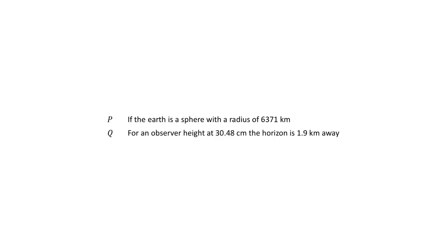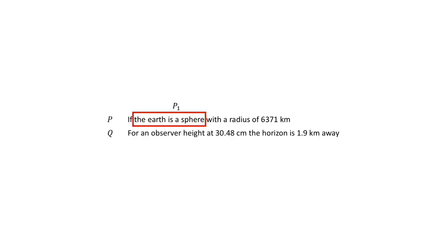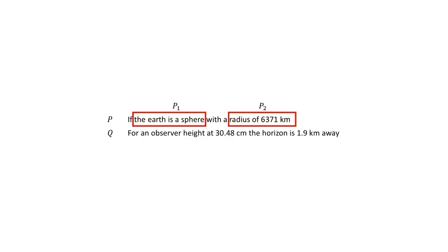I will take this very slow, as it is clear that even baby steps is a bit too fast for you. The premise is as follows: the earth is a sphere with a radius of 6,371 kilometers — that's P1. P2 is that the earth has a radius of 6,371 kilometers. The logical conclusion is that for an observer height of 30.48 centimeters, the horizon should be 1.9 kilometers away.